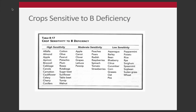These tables, which I'll show with each micronutrient, give some idea of the sensitivity of different crops. The last lecture showed tables with only field crops, but this is more inclusive in terms of vegetables, specialty crops, fruit crops, et cetera — showing high, moderate, and low sensitivity depending on the crop you're working with.